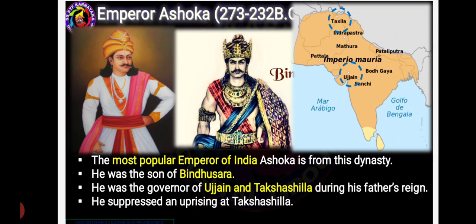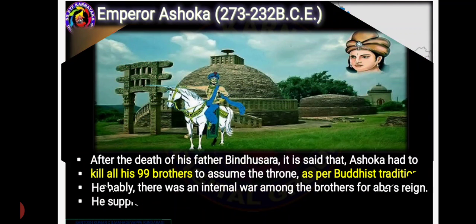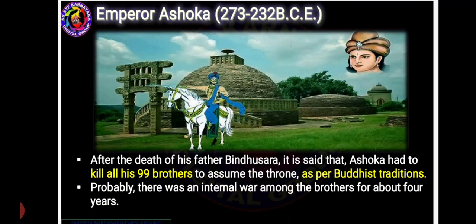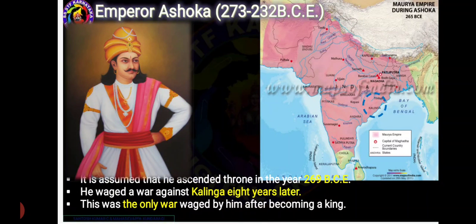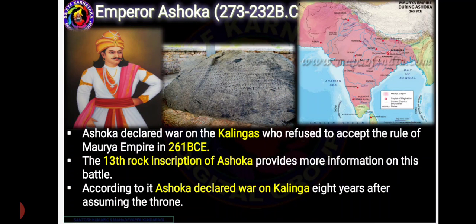Earlier Ashoka was the governor of Ujjain and came to power by suppressing Takshashila. It is said that Ashoka had to kill all his 99 brothers to come to the throne, and there was internal war for four years among the brothers. Ashoka came to power in 269 BCE and fought only one war — against Kalinga — because the Kalingas refused to accept the rule of the Mauryans. All this information we get from the 13th Rock inscription of Ashoka.